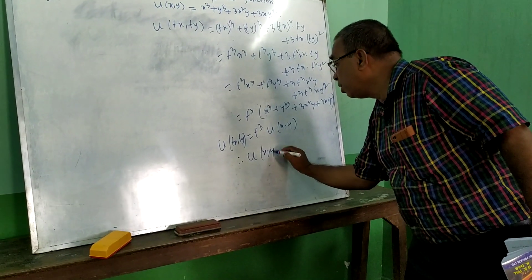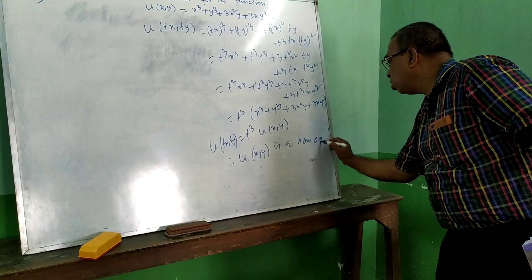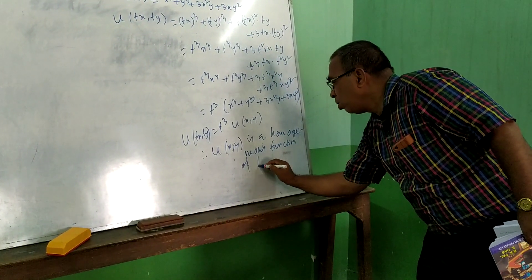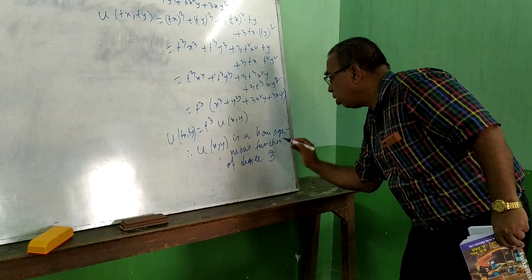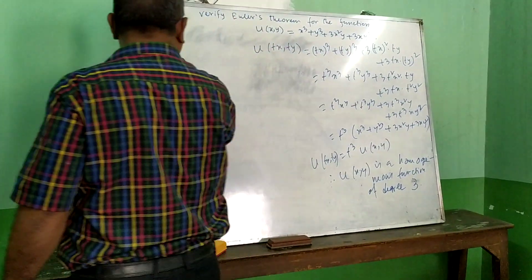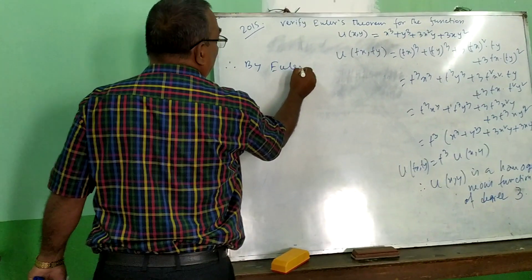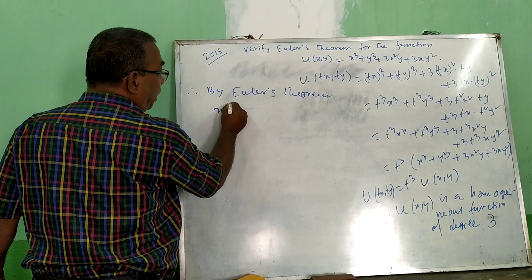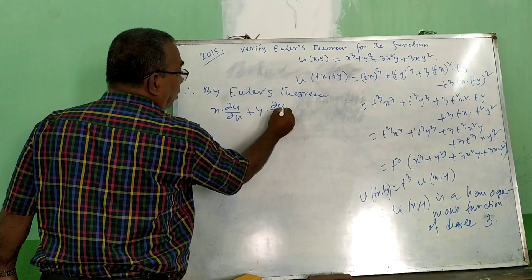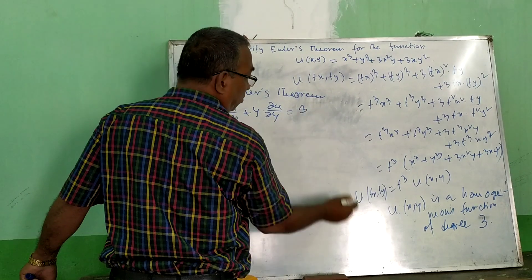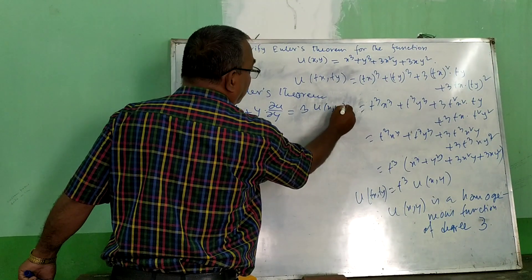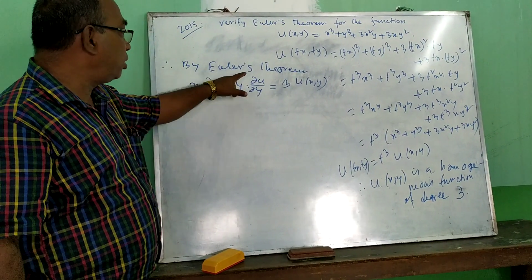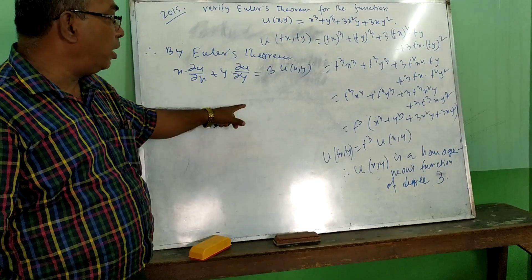Therefore U(x,y) is a homogeneous function of degree 3. Therefore, by Euler's theorem, x·(∂u/∂x) + y·(∂u/∂y) is equal to 3·U(x,y) — because the degree is 3.